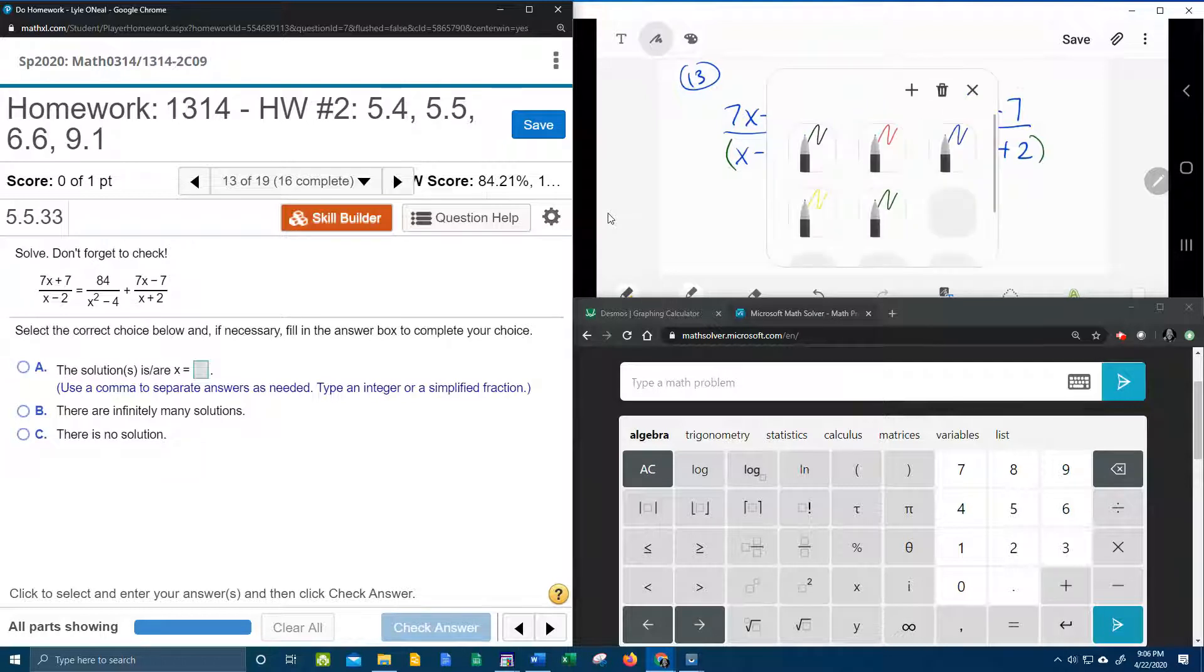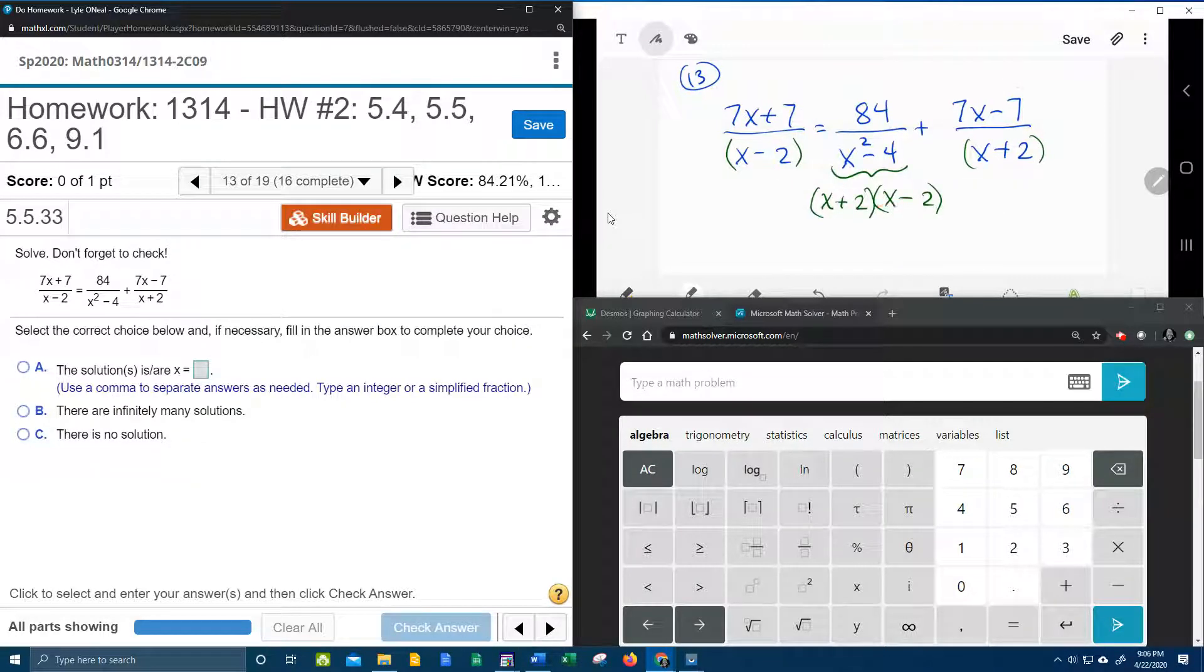And so now what we're going to do is go through and look at every denominator and give them what they need so that every denominator is identical. The first denominator has an x minus 2, what he needs is the x plus 2. So I'm going to give him the x plus 2, whatever I do to the bottom, I have to do to the top. The last denominator has the x plus 2, what does he need? He needs the x minus 2, and whatever I do to the bottom, I have to do to the top. So the top gets an x minus 2. Notice that the middle denominator has an x plus 2 and an x minus 2, so he doesn't need anything.